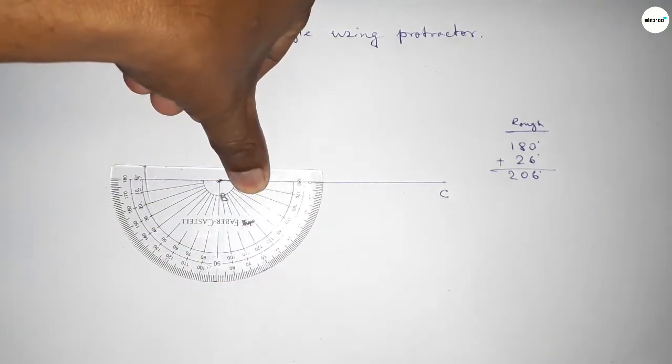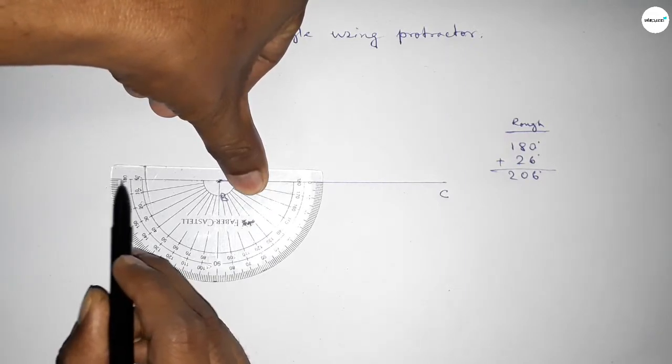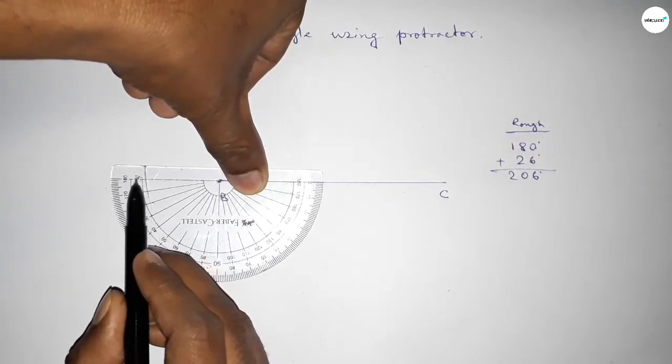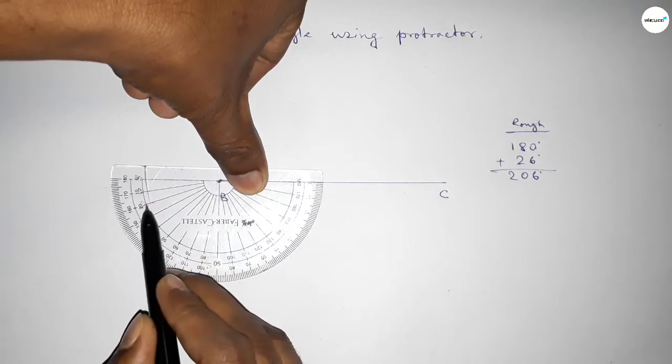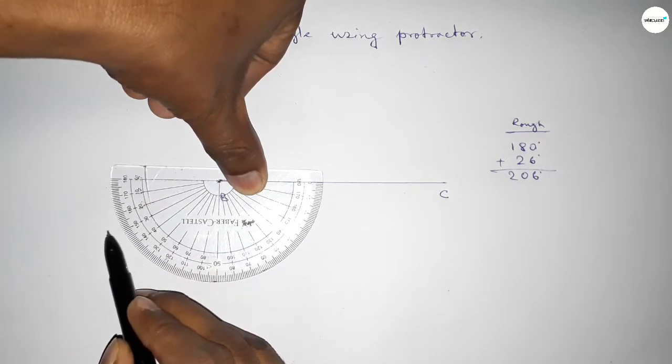Now this is the 180 degree angle. Starting from 0, we count 10, 20, 25, 26 degrees. By adding this 26 degree angle to 180 degrees, we get a 206 degree angle.